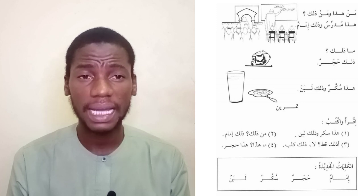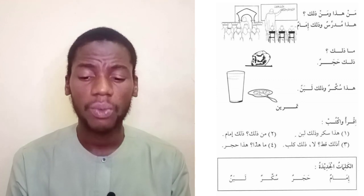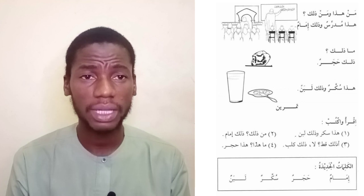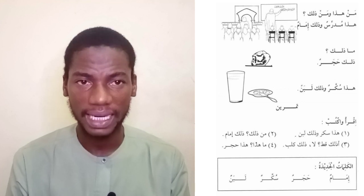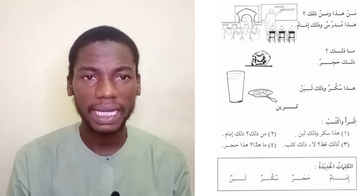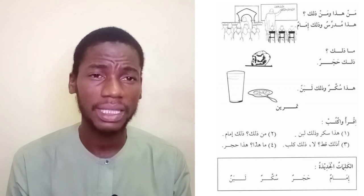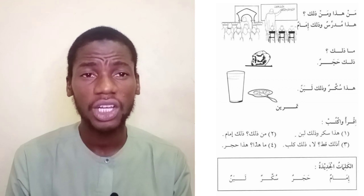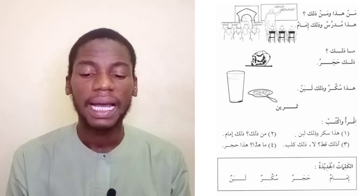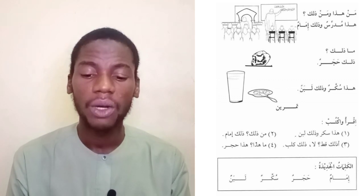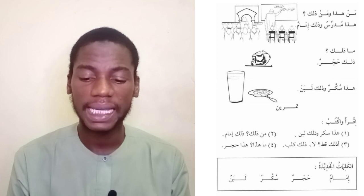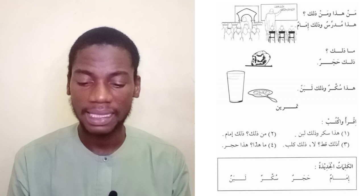'Ma thalik?' — what is that? 'Thalik hajarun' — that is a stone. 'Hatha sukkarun wa thalika labanun' — this is sugar and that is milk. So 'hatha sukkarun' — this is sugar — 'wa thalika labanun' — and that is milk.